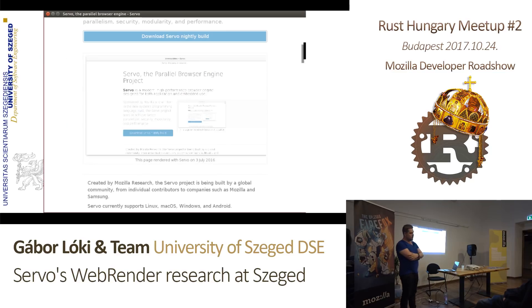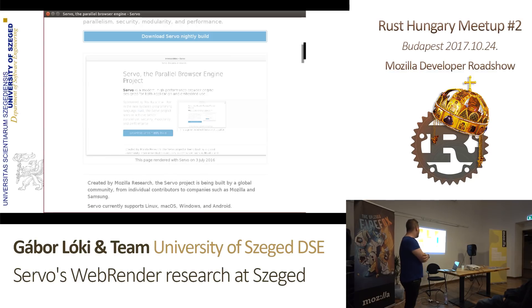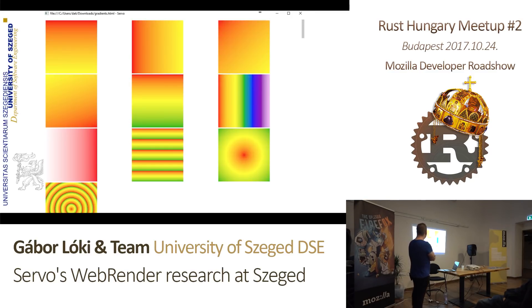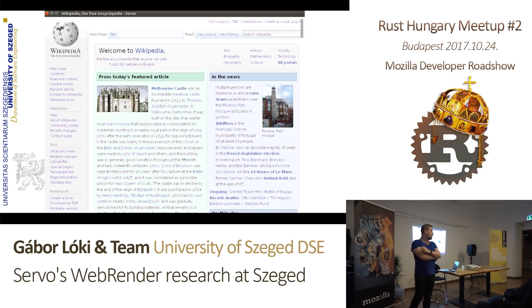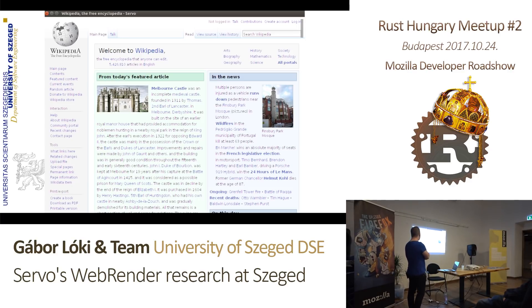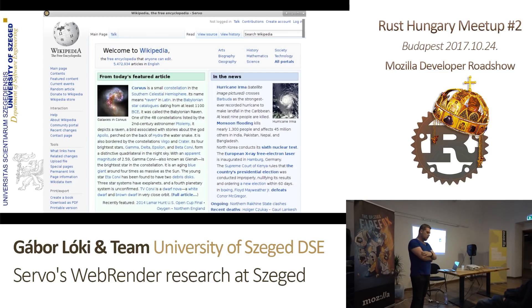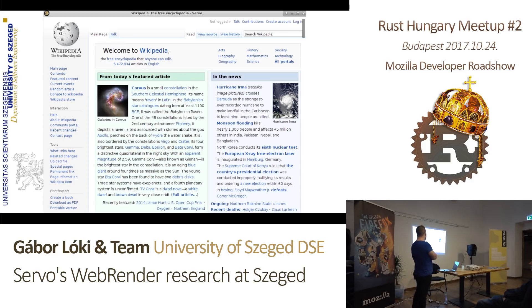We managed to fix it, and after a while we had text, images, and even gradients — that was cool. After a while it started to look like an actual web page, though the colors were off and we didn't support clipping-related things like curved corners. Finally we managed to get everything right, and this is almost the exact same page you would get with the original WebRender.